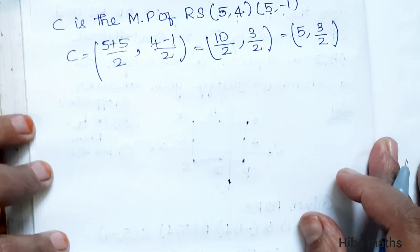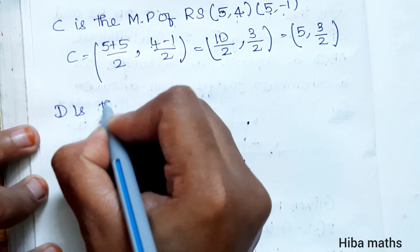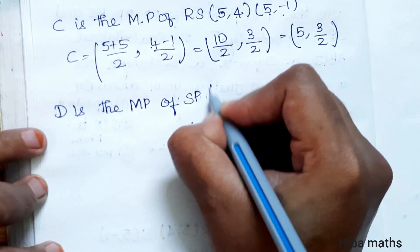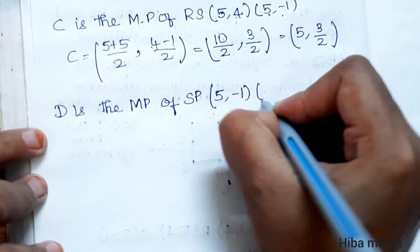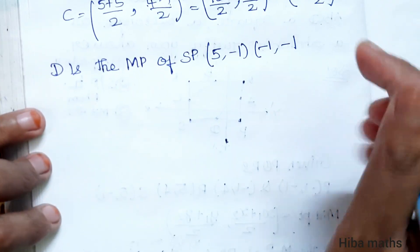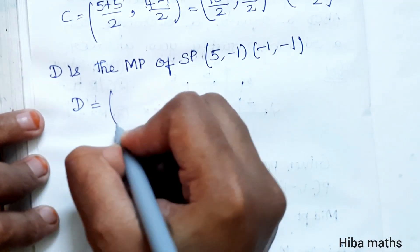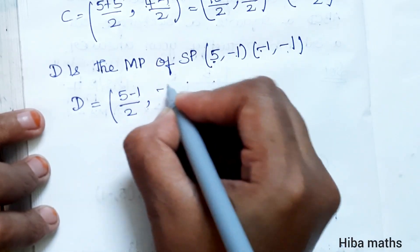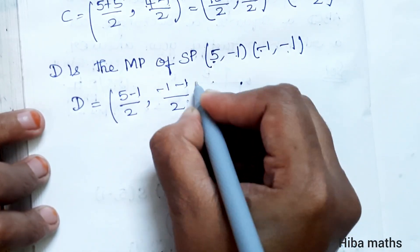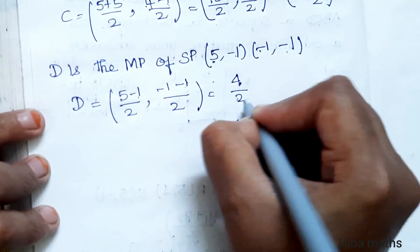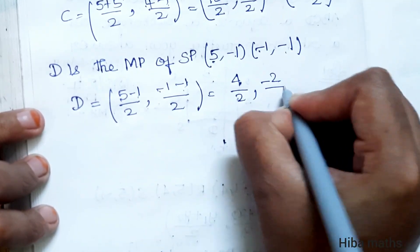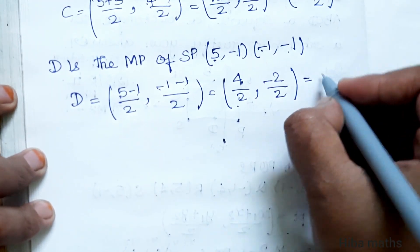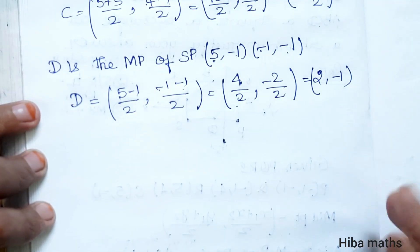D is the midpoint of SP. S is (5, -1) and P is (-1, -1). D = (5 + (-1))/2, (-1 + (-1))/2 = 4/2, -2/2 = 2, -1. So D = (2, -1).